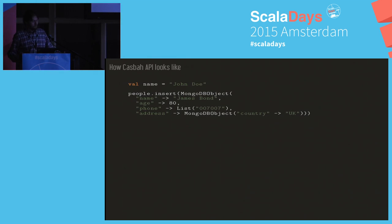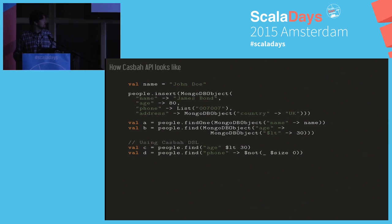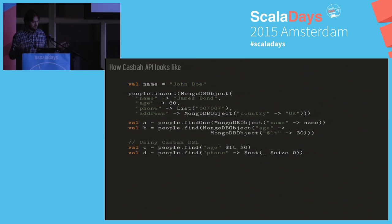Here's an example with Casbah. Each time we need to create a BSON document, we use the MongoDBObject factory method, which takes a list of key-value pairs. The values can be plain objects, collections, or nested objects. The same idea applies with finding. Casbah also provides a DSL to simplify things, but sometimes it's not really easy to understand and a bit weird — for example, the last statement because of that function with size. Also there's no DSL for aggregation.